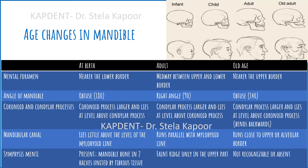Regarding the level of the coronoid and condylar processes, at birth the coronoid process is larger and lies above the level of the condylar process — the opposite is true in adults and old age, where the condylar process is above the coronoid process. In old age, the coronoid process is also bent backwards. Regarding the mandibular canal, at birth it lies above the level of the mylohyoid line; in adults it runs almost parallel with the mylohyoid line; and in old age it comes to lie near the upper alveolar border. The symphysis menti is present at birth as the mandible exists in two halves. In adults it is represented only by a faint ridge in the upper part, and in old age it is almost unrecognizable.